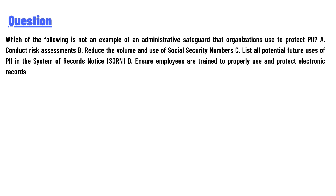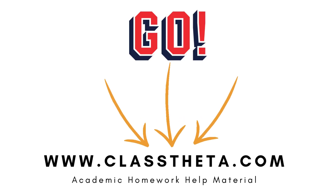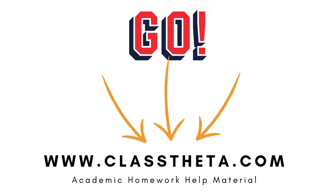The answer is C: list all potential future uses of PIA in the system of record notice. Thank you for watching the video.